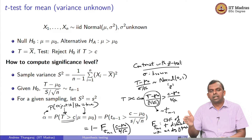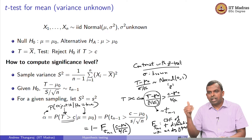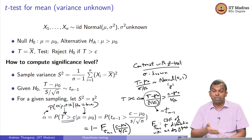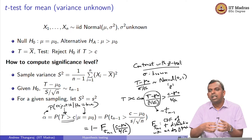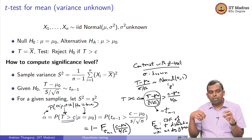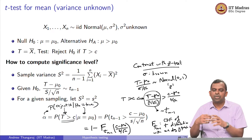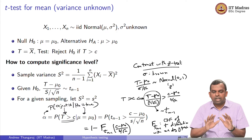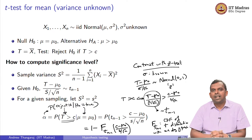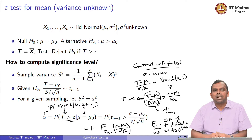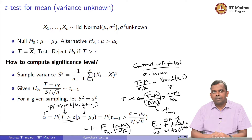You can do a very similar calculation for power, just like in the Z test. Given a particular alternative value, you can find the power against that alternative and the type 2 error probability. The T distribution comes in — the distribution slightly changes; it is not Z anymore. Given the alternative is true, the distribution of T will be T minus the alternative mean divided by S over root n, following a T distribution, which you use to calculate beta.